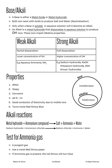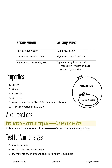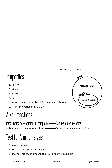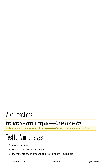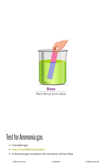Now we will learn a new chemical reaction that is unique to alkalis. Alkalis, also known as a metal hydroxide, will react with ammonium compounds to produce a salt, ammonia gas, and water. For instance, sodium hydroxide will react with ammonium chloride to produce sodium chloride, ammonia gas, and water. Also, please recall the test for ammonia gas. Since ammonia is a pungent gas that is also alkaline, we can test for it using a moist red litmus paper. If ammonia is present, the red litmus paper will turn blue.